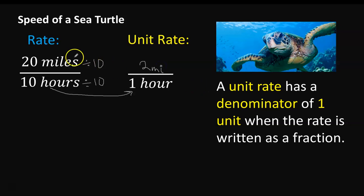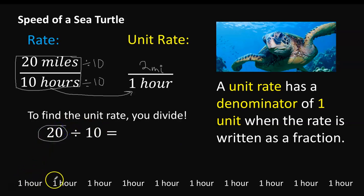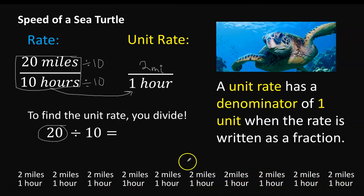Now remember the shortcut. We could have just taken the 20 miles and divided it by 10 hours. To find the unit rate, you just have to divide. Let's think about it more critically. If you were going to take that 20 miles and split it up evenly amongst 10 hours, that would be 2 miles per hour.